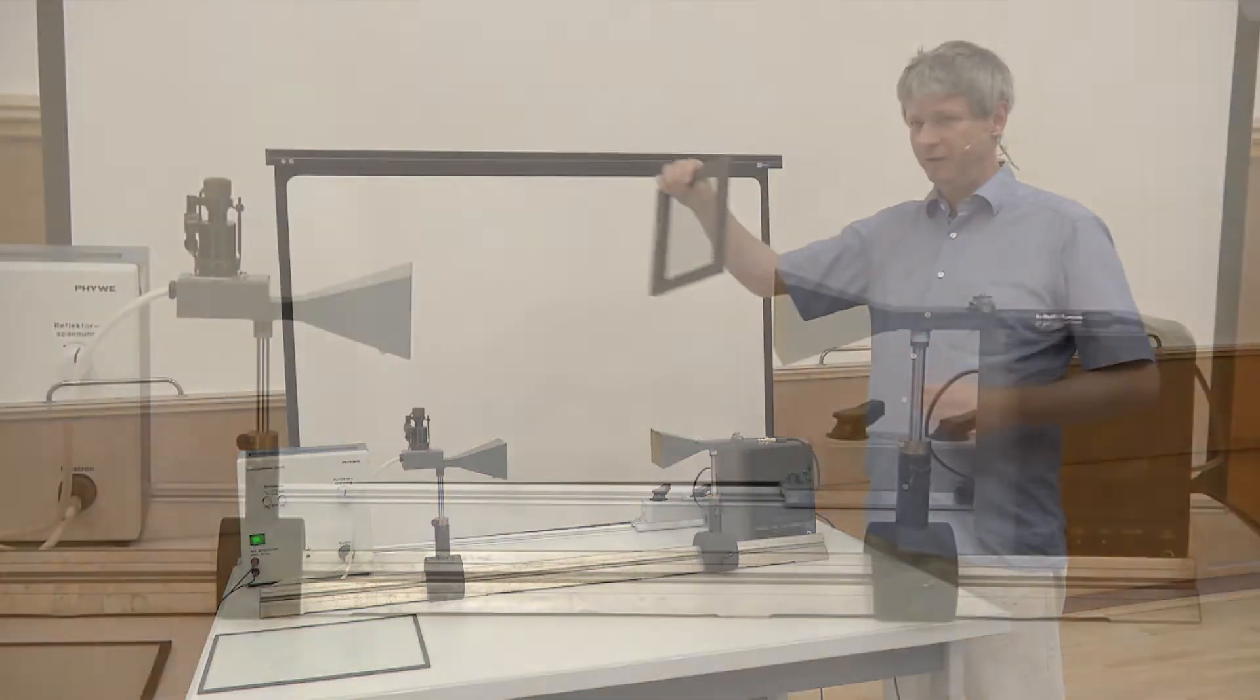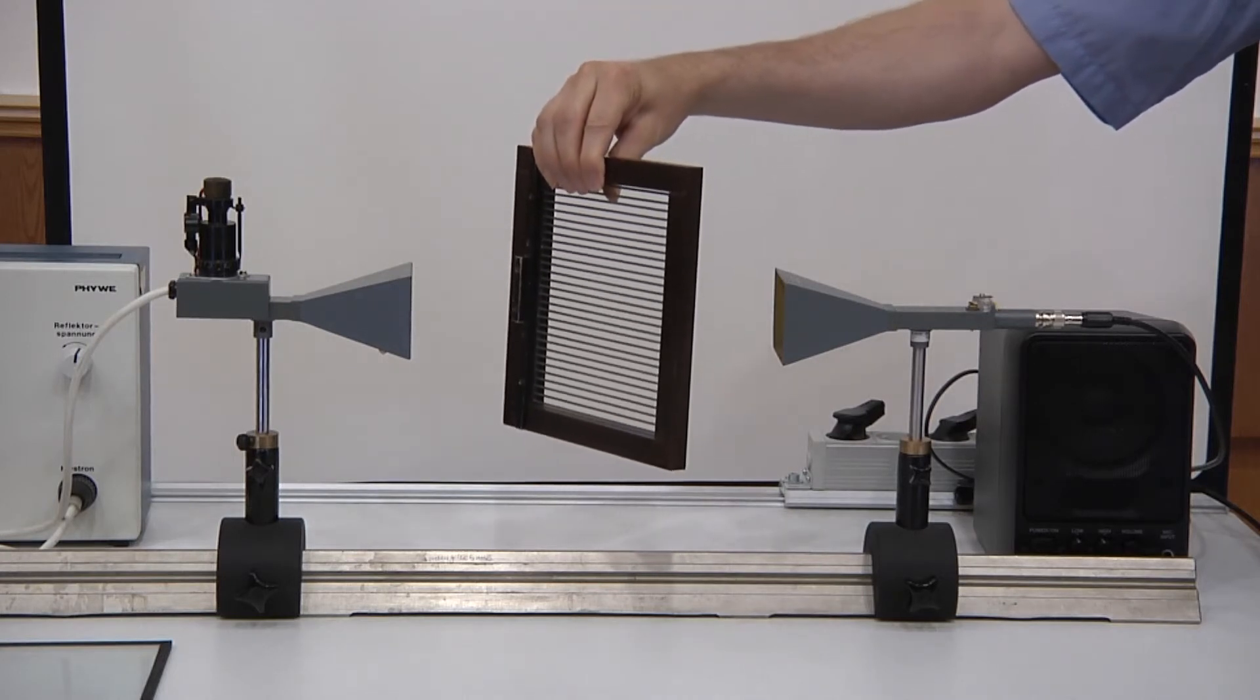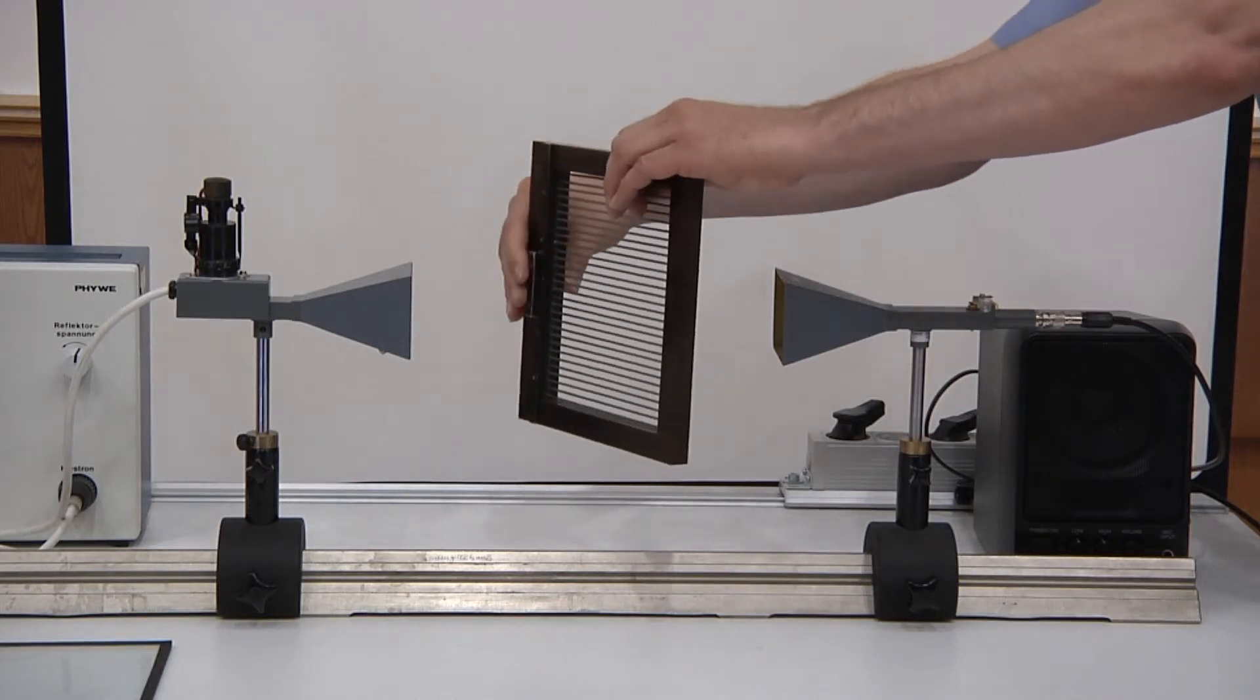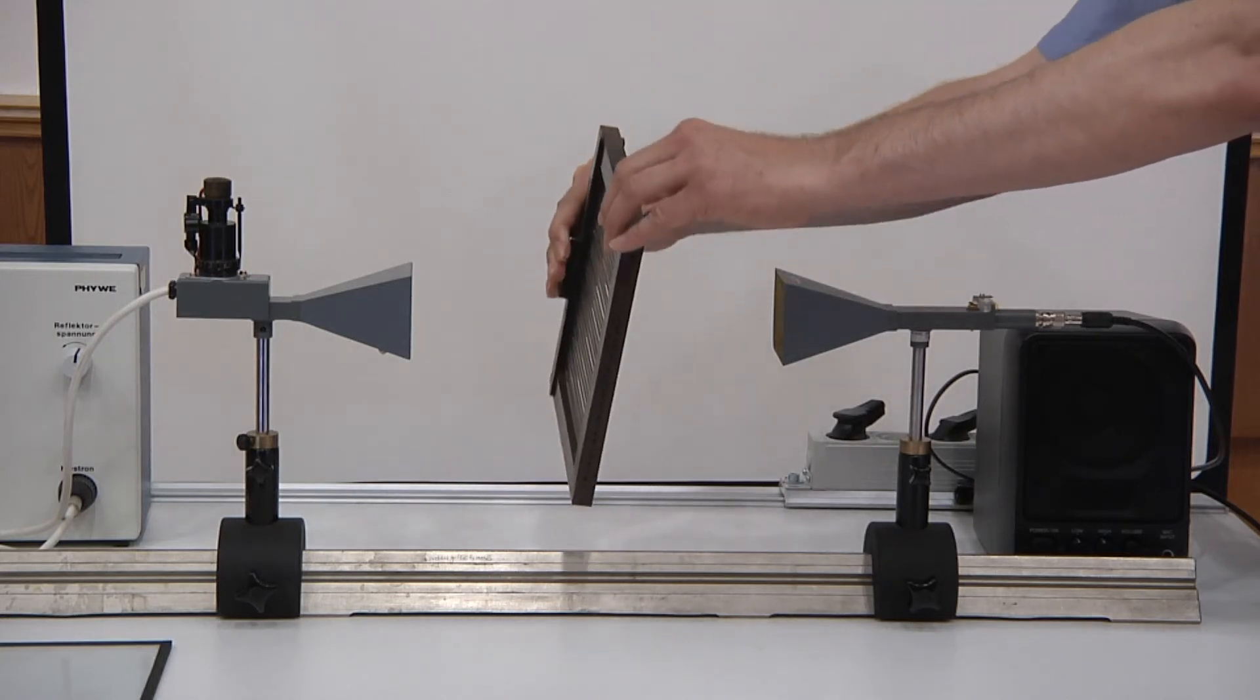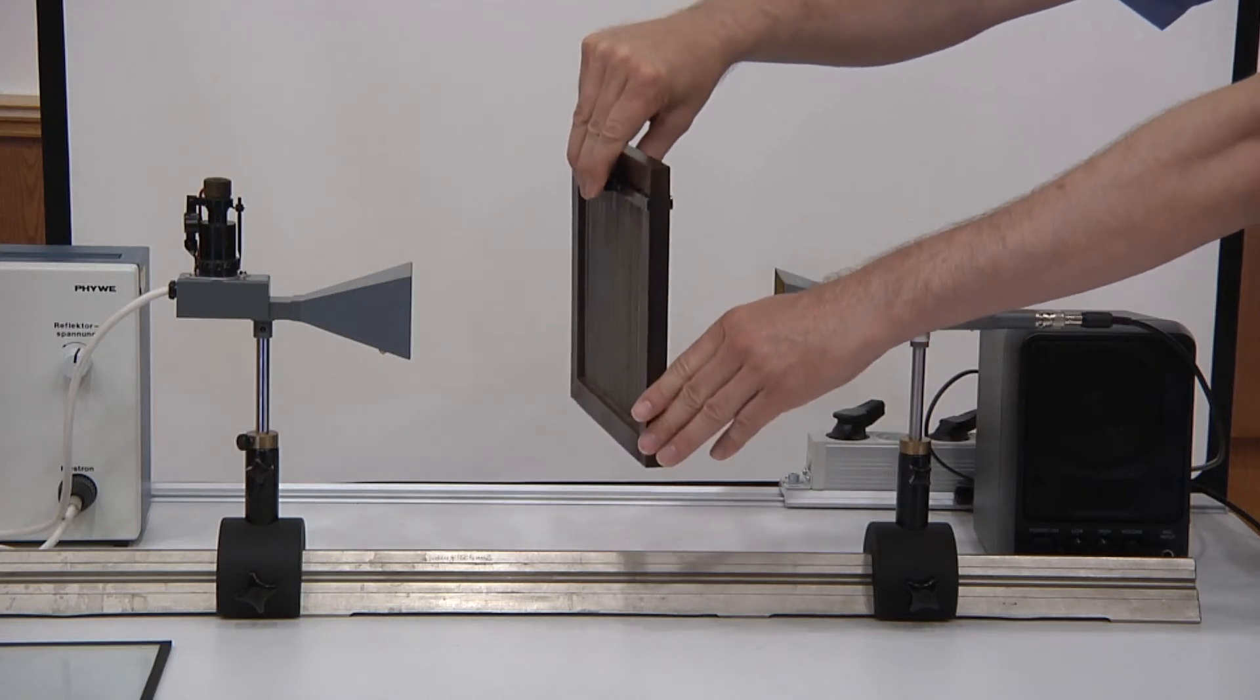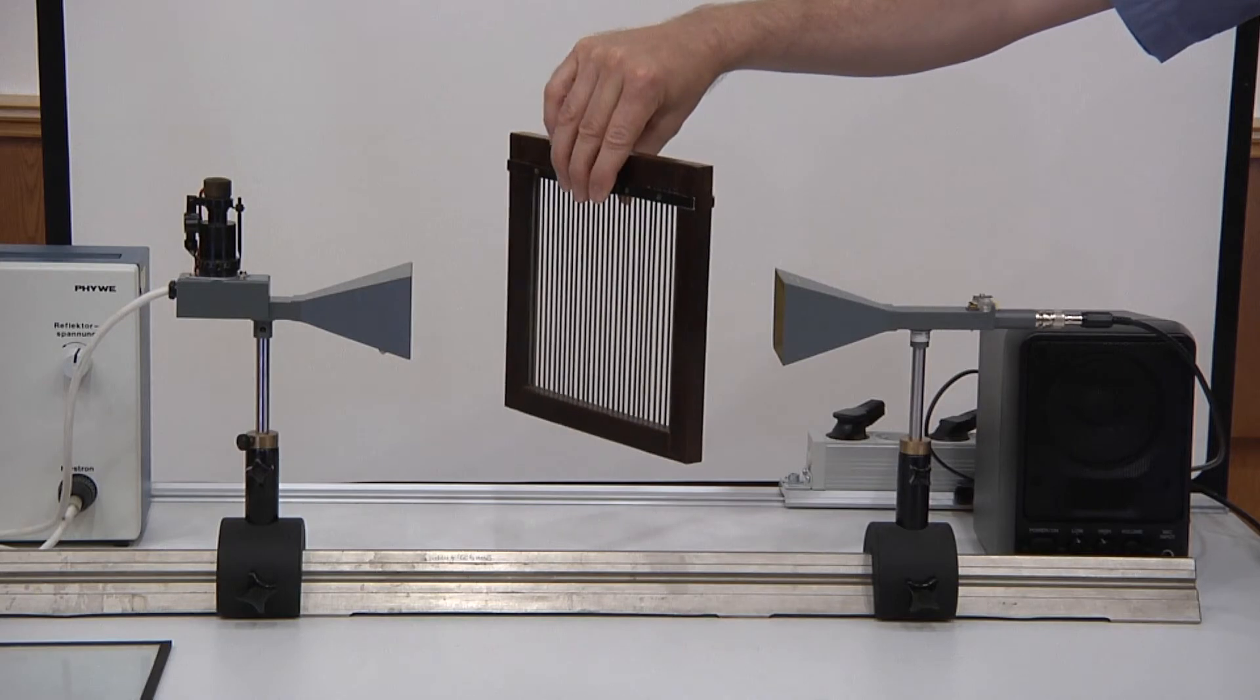So what you see, if I put a grating of metal bars, nothing seems to happen. But then when you rotate it, you see that almost no signal can penetrate through these metal bars.